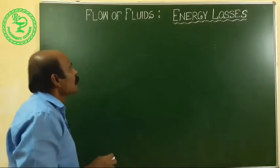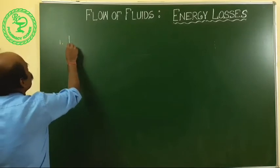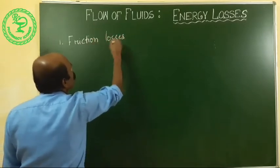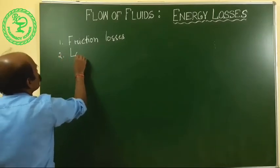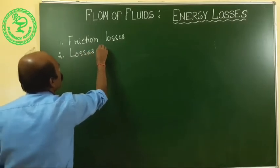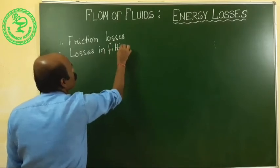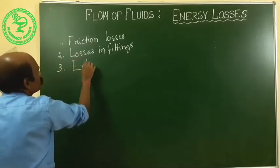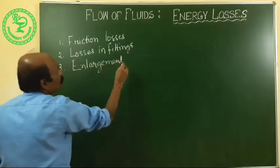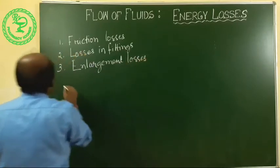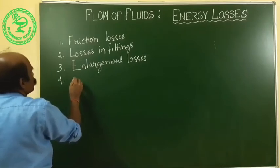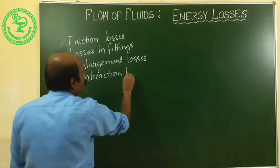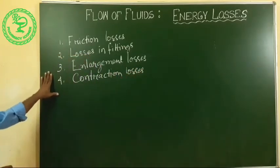Energy losses are of four types. Number one: friction losses. Number two: losses in fittings. Number three: enlargement losses. Number four: contraction losses. So these are the four energy losses.